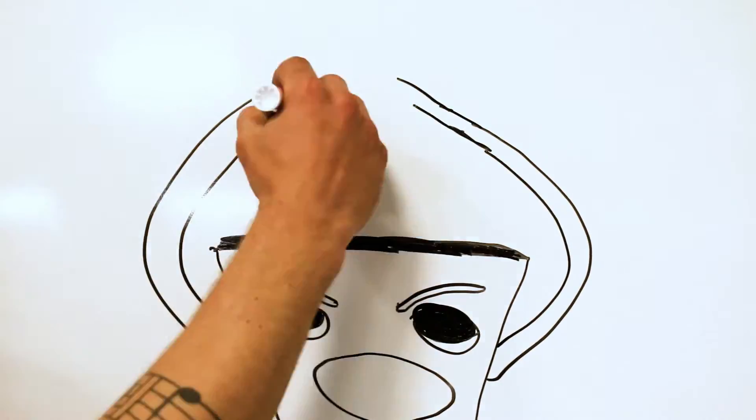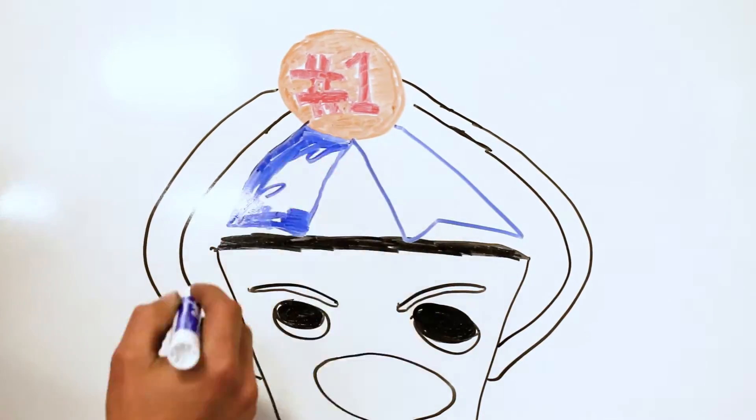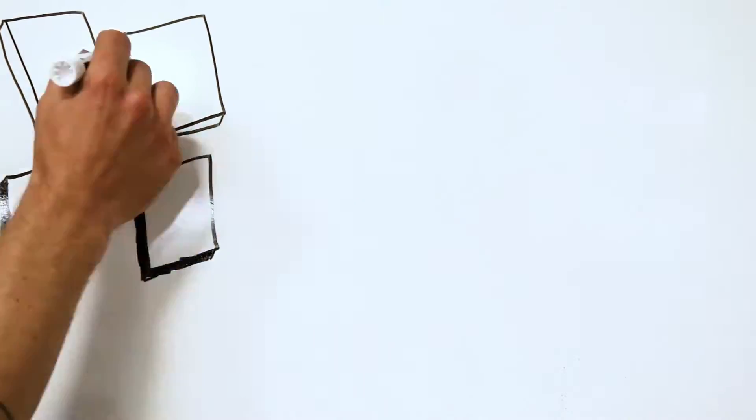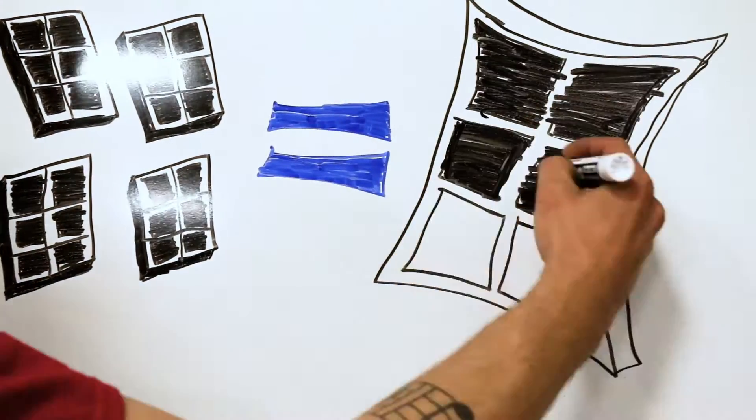But not all solar is created equal. SunPower panels hold the world record in efficiency, meaning you can generate the same amount of power as a normal panel, but use less of your roof space.